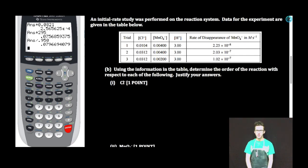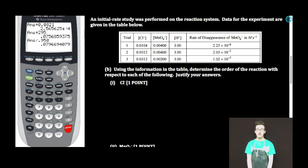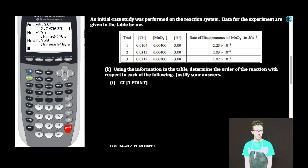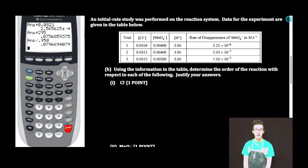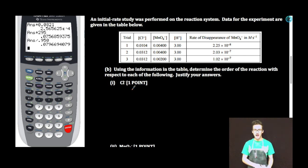An initial rate study was performed on the reaction system. Data for the experiment are given in the table below. Part B: using the information in the table, determine the order of the reaction with respect to each of the following. Justify your answers. Subpart I.